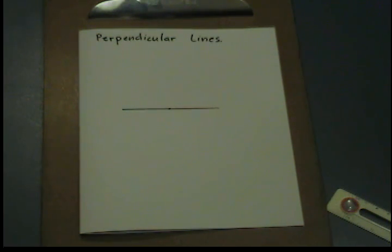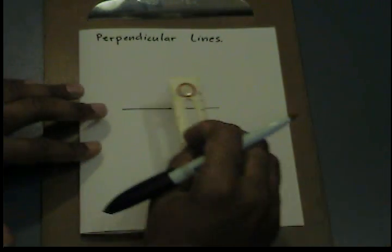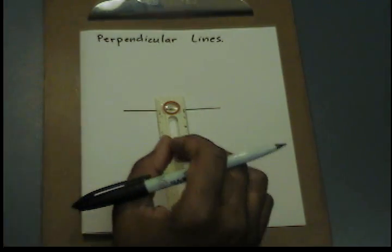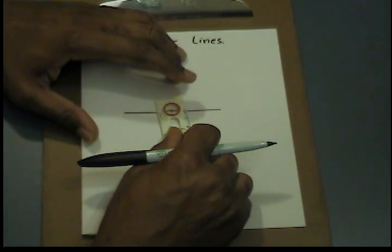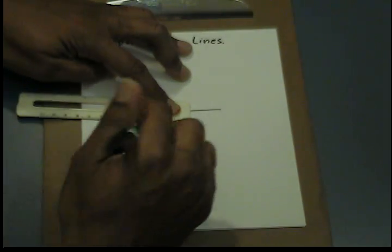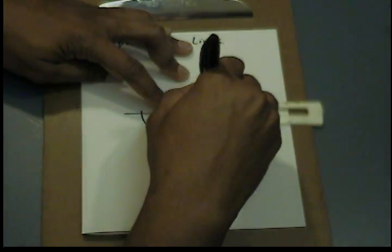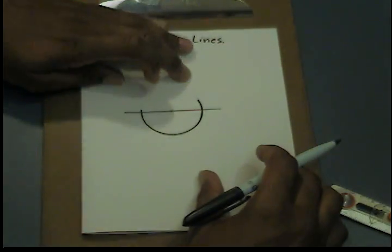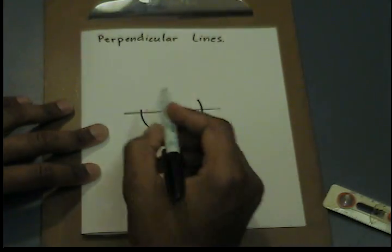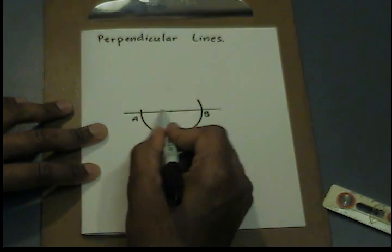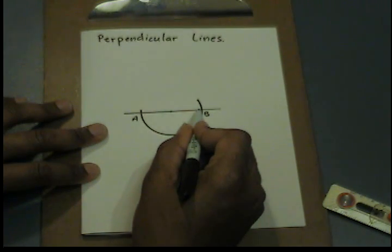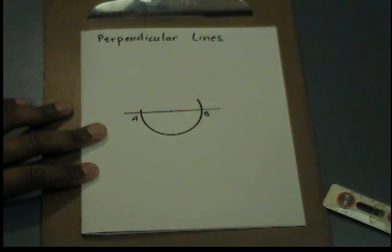That is going to be the segment that we're going to bisect. Using the point they give you, I'm going to place the rotating end there. I'm going to measure out a distance so that I can create two more points on the line that are not too far apart. Now we have two points, A and B, that form a segment we can bisect. So similar to the process for bisecting a segment, I'm going to do that now using A and B as my two points.